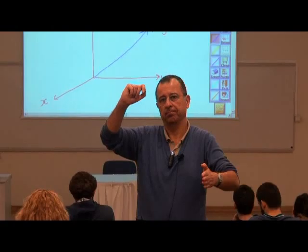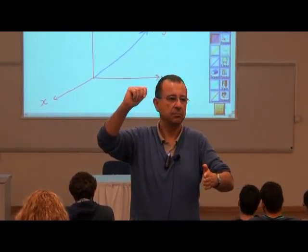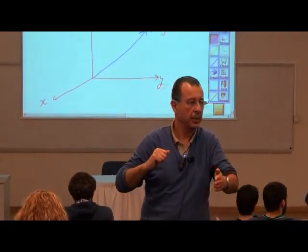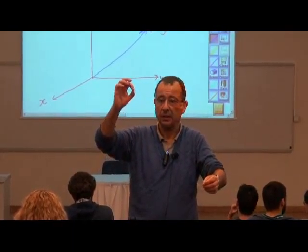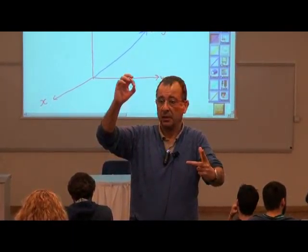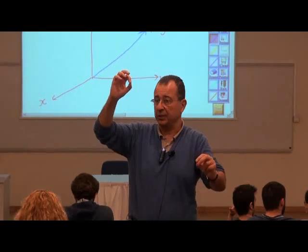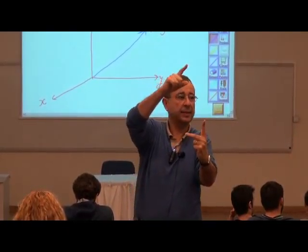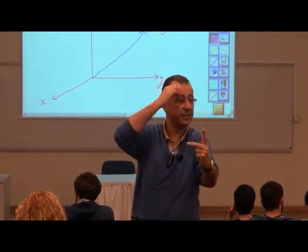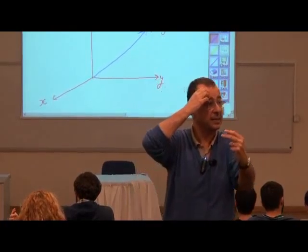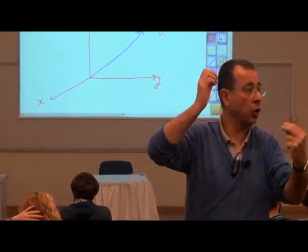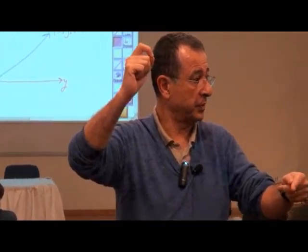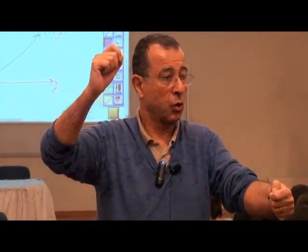You can call them anything you want, but usually we call them x, y, z, as I've drawn there. Then I give the coordinates of this point. For example, the coordinates of this point might be 3, 5, and 7.